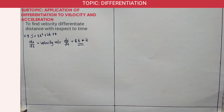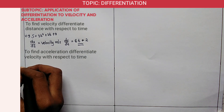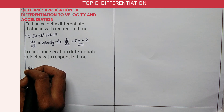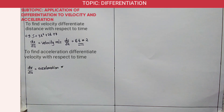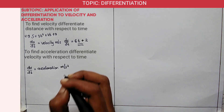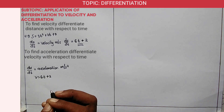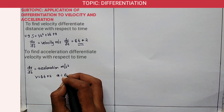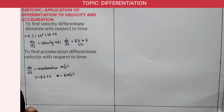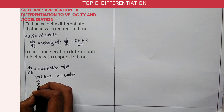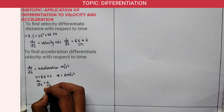The third concept: to find acceleration, differentiate velocity with respect to time. So dv/dt equals acceleration, and the units for acceleration are meters per second squared. In this case, if velocity is 6t plus 2, then differentiating gives acceleration equal to 6 meters per second squared, since the constant 2 differentiates to zero.